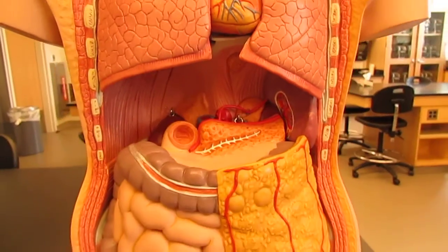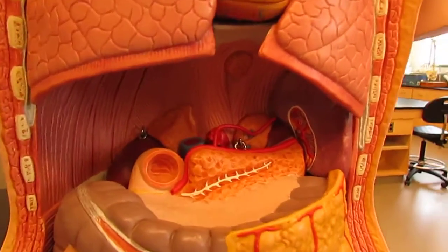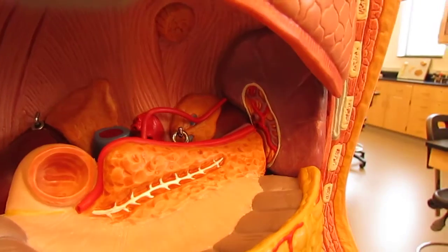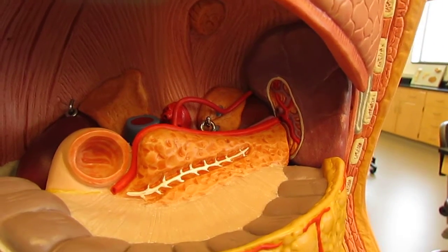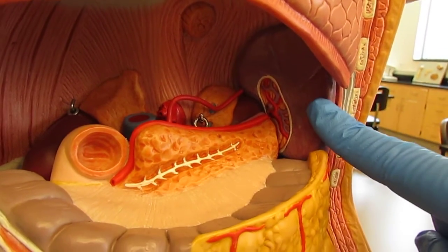If we remove the liver and the stomach, what we see is a purple organ all the way to the left side of your abdominal pelvic cavity. This is called your spleen.